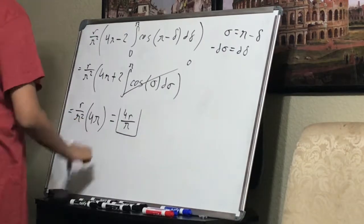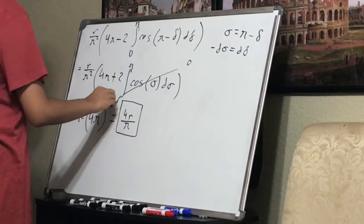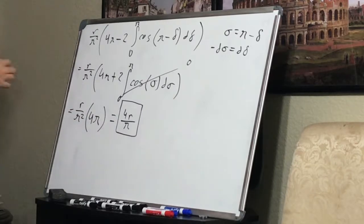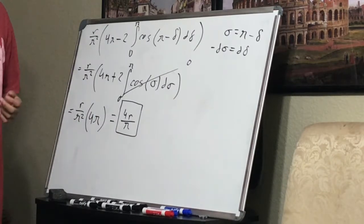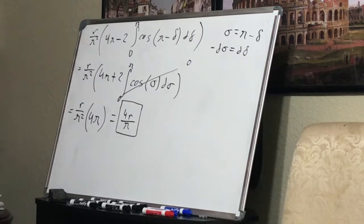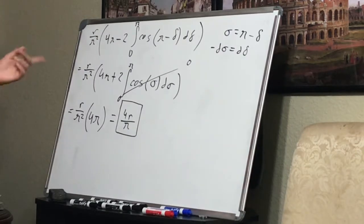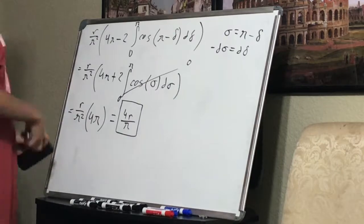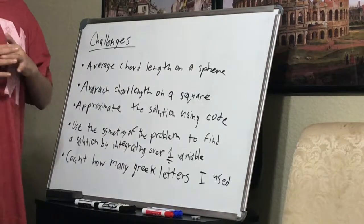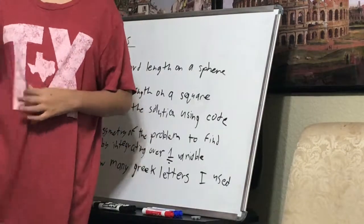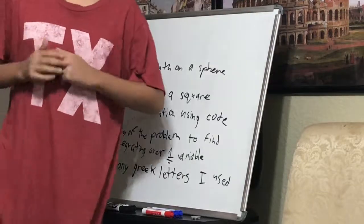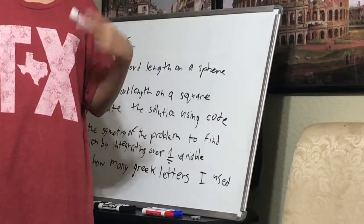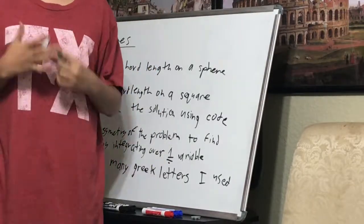So if you want to find the average length of a chord on a circle with a radius of R, it's the expression 4R over pi. Pretty simple result! We did a lot of steps on the way, but I have a couple more challenges for you. Thanks for watching this video.